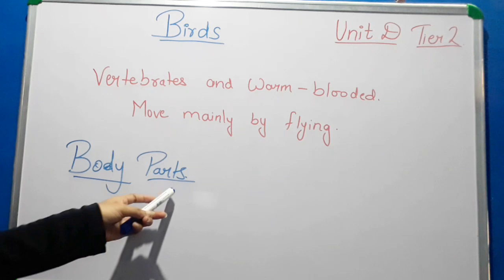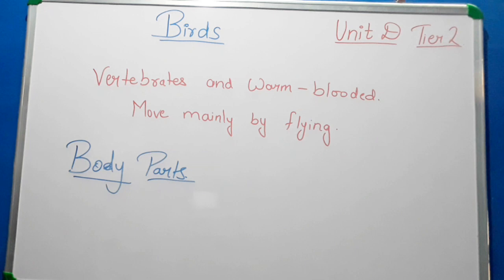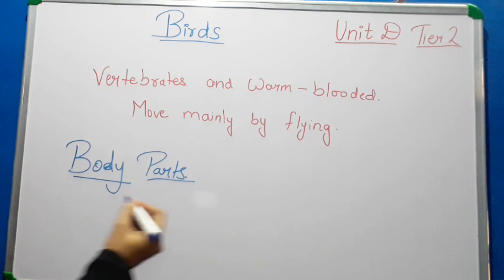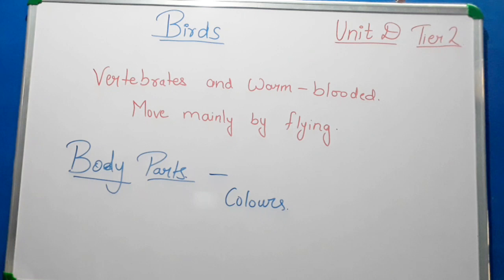Birds have wings, feathers and a beak. All the birds have wings, but all the birds cannot fly. Birds are the only animals that have feathers. Birds are of different colors and they have very keen eyesight.